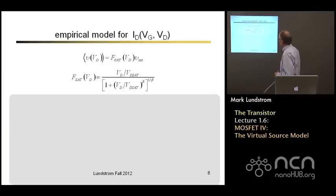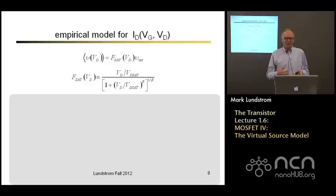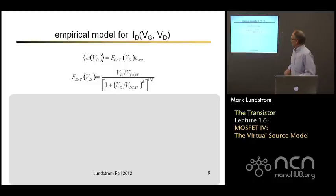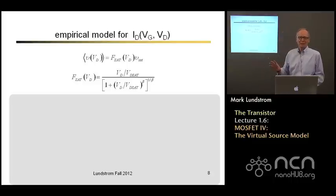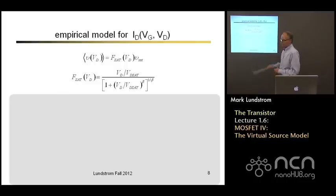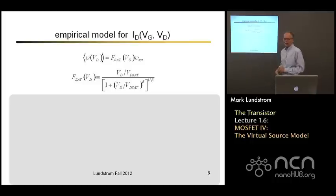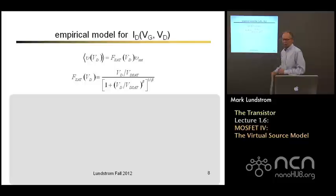Here's the way we do it in the virtual source model. We introduce an empirical function — it's physics-motivated, but the physical underpinnings are just a little bit weak. The expression looks like this: it's an empirical expression. It's drain voltage divided by VDSat over one plus (drain voltage divided by VDSat) to some power beta, and then the whole quantity to the power one over beta. That's an empirical expression.